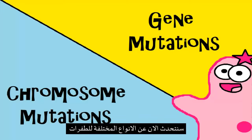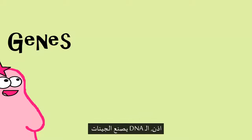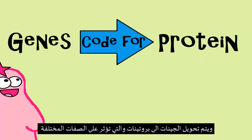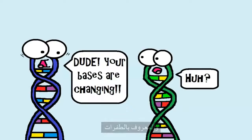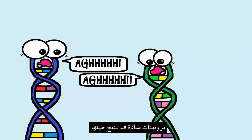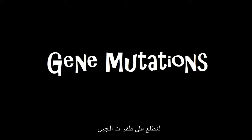So we're going to talk about the different kinds of mutations. First, we're going to talk about gene mutations. DNA makes up genes, and genes code for proteins that influence or make up different traits. So when DNA has changes — otherwise known as a mutation — then different proteins can be produced, and this can affect an organism's traits.